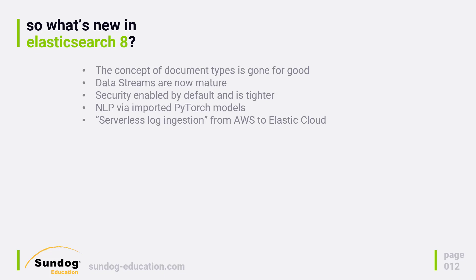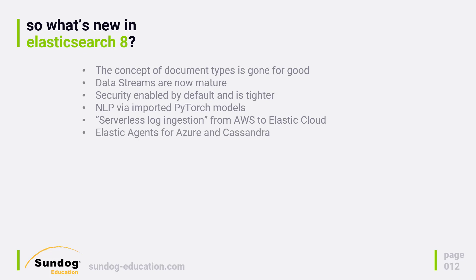Another new thing is serverless log ingestion, which allows you to ingest data from Amazon's S3 or Lambda services directly into Elastic Cloud. This is interesting because Amazon Web Services has forked the open source version of Elasticsearch and called it OpenSearch, moving away from Elasticsearch within AWS. This is Elastic.co's way of still integrating AWS with their Elastic Cloud offering instead of OpenSearch. They've also introduced new Elastic agents for Azure and for the Cassandra database.